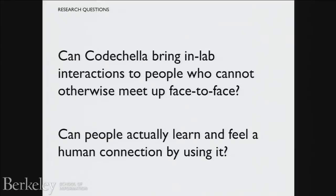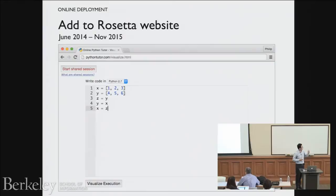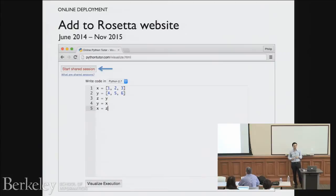To evaluate Coachella, we did an in-the-wild deployment because we wanted to answer these questions with naturalistic data rather than a lab study. We added this to the Rosetta website for about a year and a half — it's actually still on the site. There was a shared session button and that was it. No advertising. This is just a tool that the existing pool of users who are already learning online can choose to use if they want.